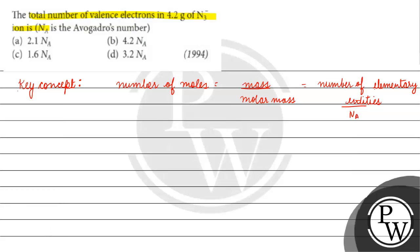We have the mass given as 4.2 grams, and we are given N₃⁻ ion. So we will find how many molecules of N₃⁻ we have. The number of molecules is what we need to count for the valence electrons.